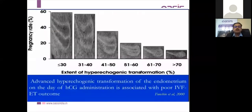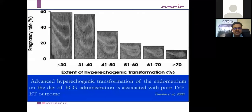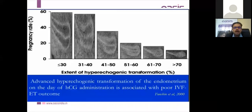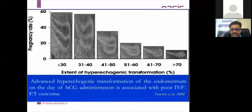Pregnancy rates are highest with a proper trilaminar endometrial pattern — around 60%. As hyperechogenicity increases, the trilaminar pattern is lost and pregnancy rates drop below 15%. More than 70% hyperechoic endometrium is associated with poor IVF outcomes. Empirically, most centers prefer endometrial thickness over 7mm, with most studies using 8mm as a cutoff. Success has been documented from 5 to 15mm; a triple layer pattern is associated with better success than hyperechogenicity.